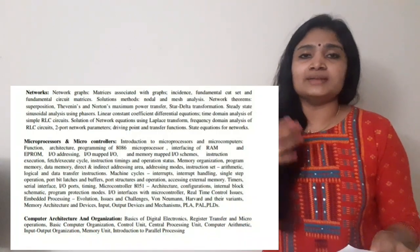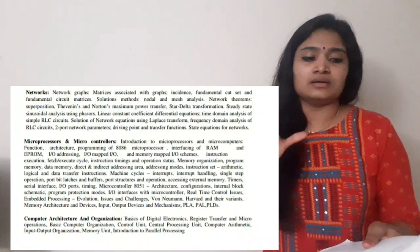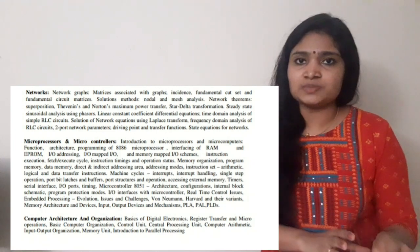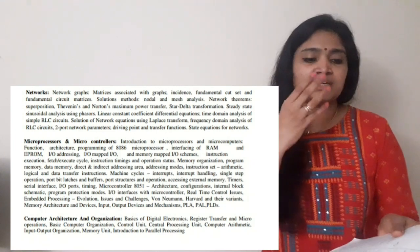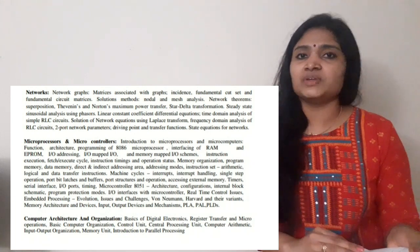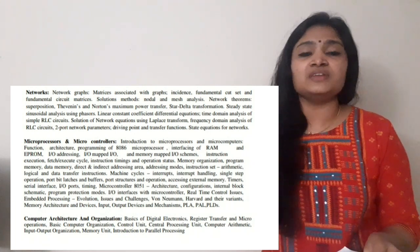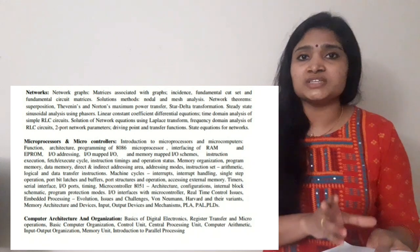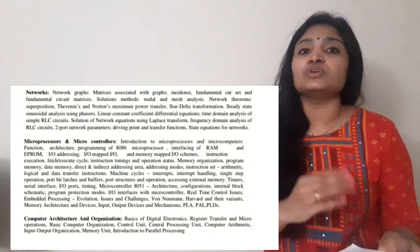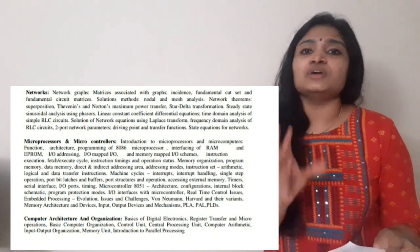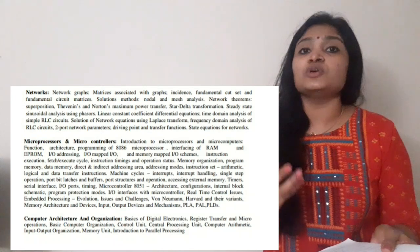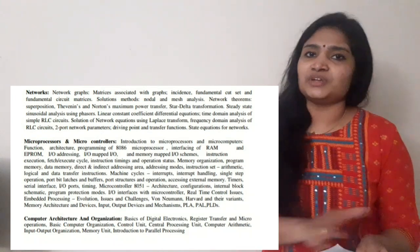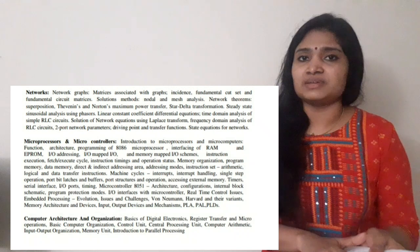Additional Electronics branch subjects include: control systems, electromagnetics, computer organization and architecture, microprocessor and microcontroller, and networks. A separate video covering the important topics from these subjects for the Electronics branch Scientist B exam will be uploaded soon.